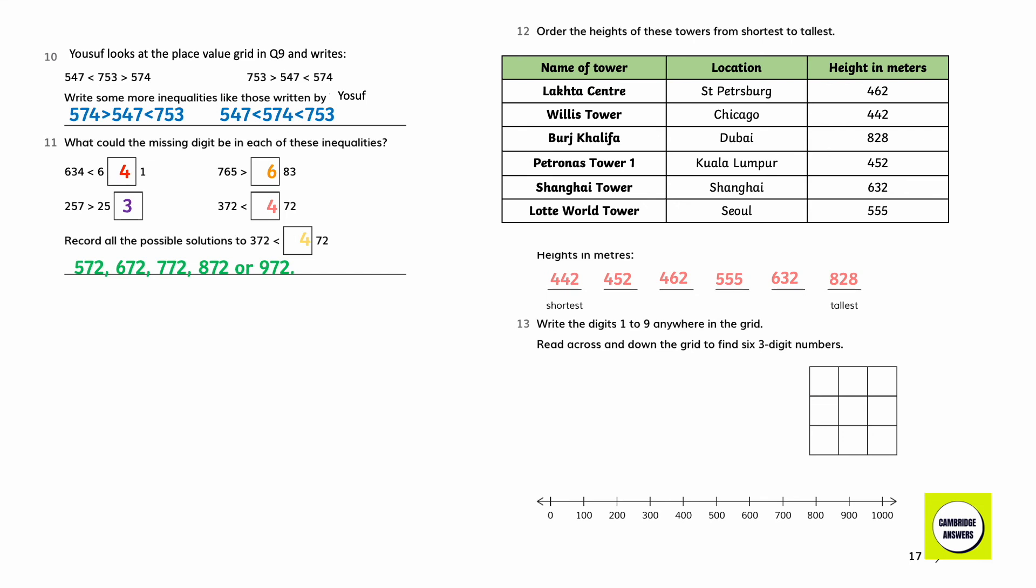Write the digits 1 to 9 anywhere in the grid. Read across and down the grid to find 6 3-digit numbers. Mark each number on the number line. 123, 456, 789, 147, 258 and 369.